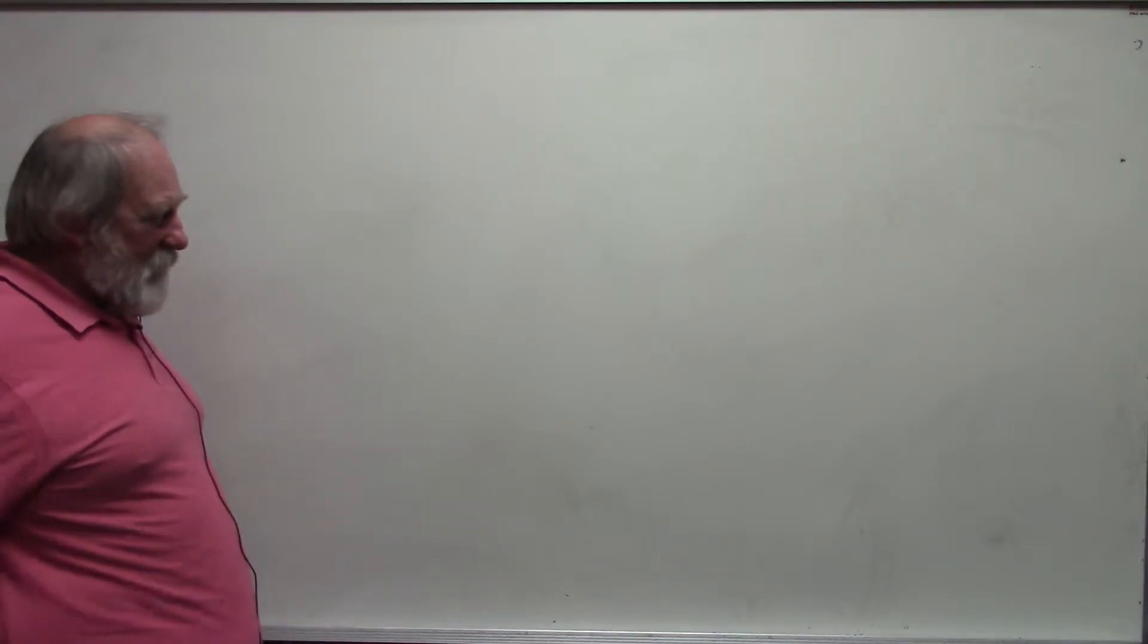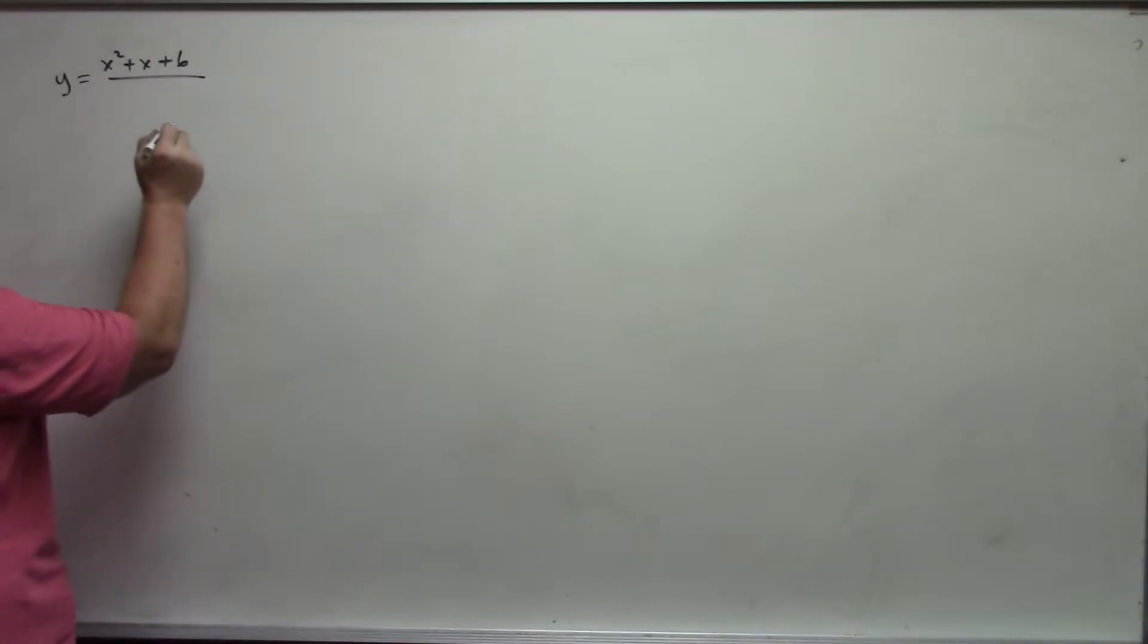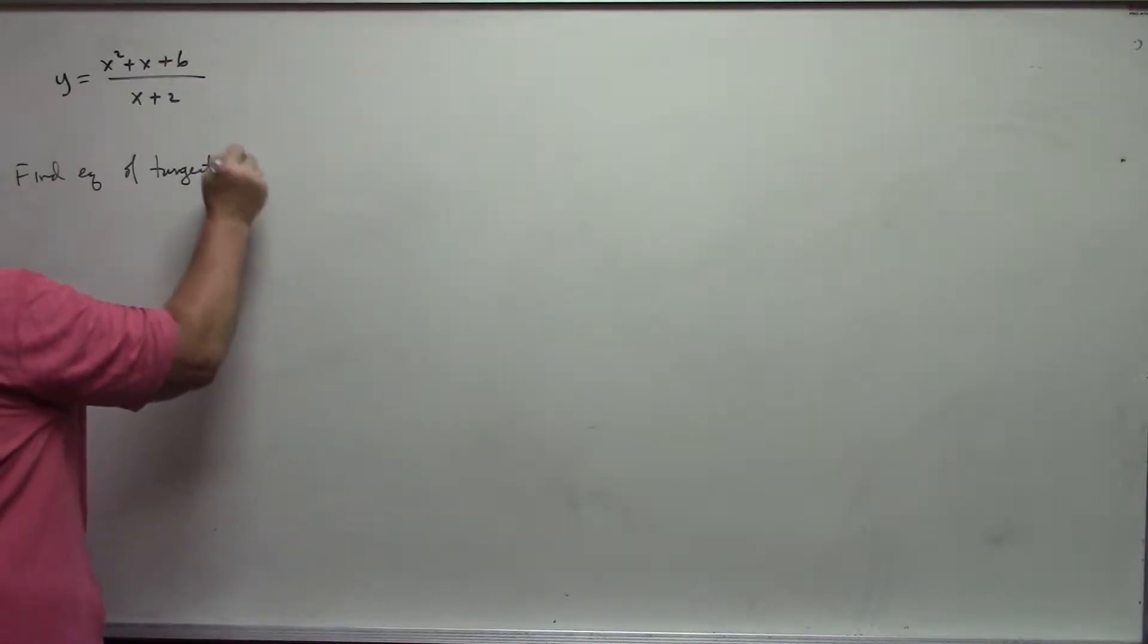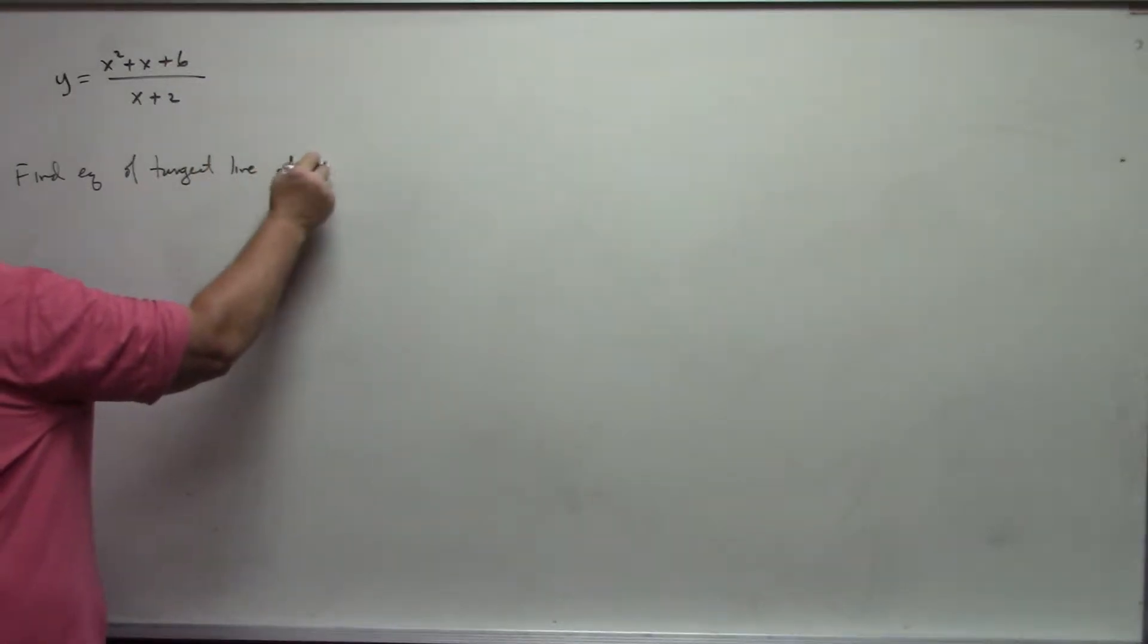And then the last two are two new types of examples. Suppose I have y equals x squared plus x plus 6 over x plus 2, and I want to first find the equation of the tangent line to this curve at x equal 1.